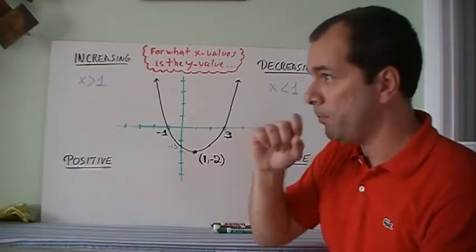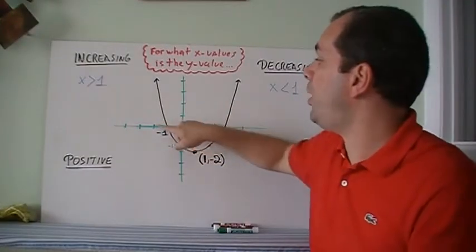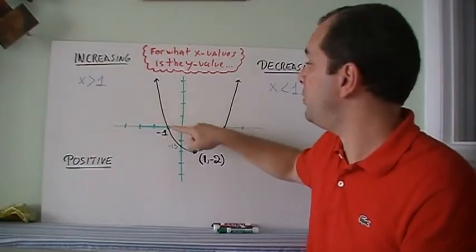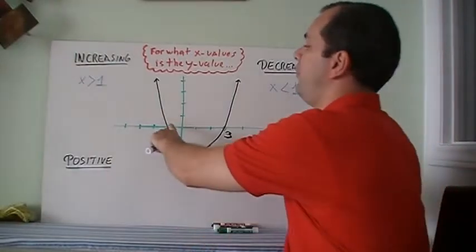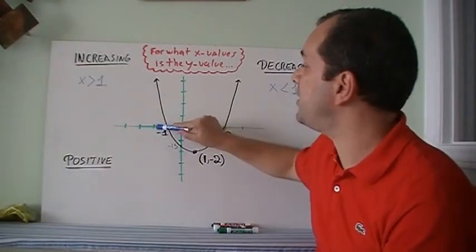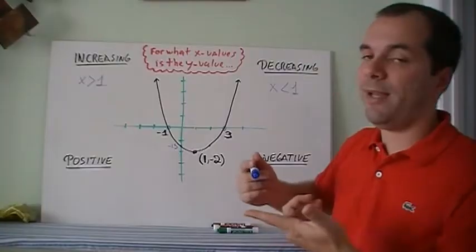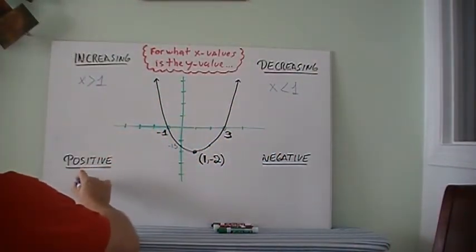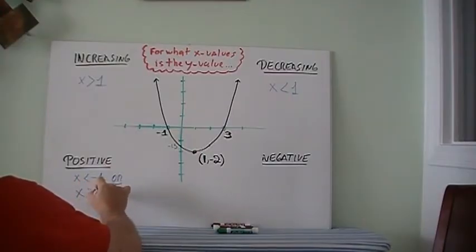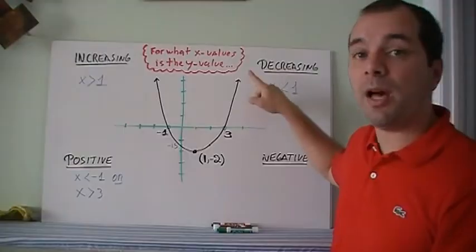When is the function positive? Positive means it's above the x axis. If I'm just looking at what time — when does this happen? Before minus 1, all my values were positive. Before minus 1 and then after 3. So before minus 1 and after 3, if I plug in those x's, I'm going to get a positive y value. If I plug in x equals minus 2, I'm going to get a positive y value. If I plug in x equals 4, I'm going to get a positive y value. Therefore, I have two answers: either x is less than minus 1, or x is greater than 3.